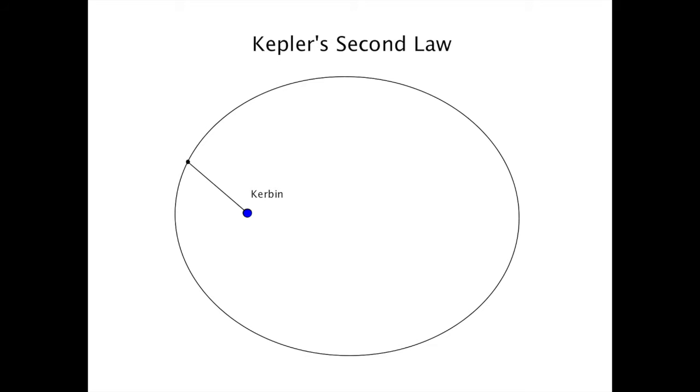After some time period, the orbiting object will have moved. Let's say it's now here. The object is said to have swept out an area A1. Now let's pick a point out by apoapsis and wait the same period of time in which the object moves to here, having swept out area 2. Kepler's second law states that as long as the two time intervals are the same, the two areas are equal.